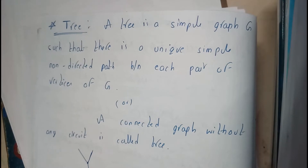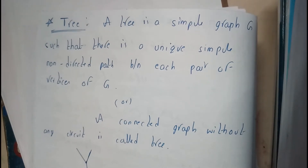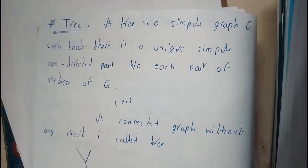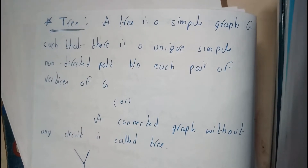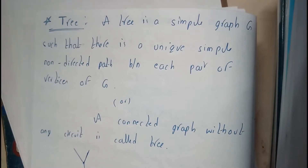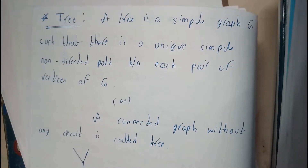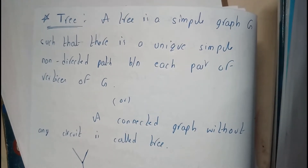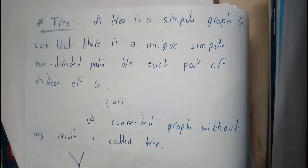In this tutorial, let's see what is a tree. A tree is a simple graph G such that there is a unique simple non-directional path between each pair of vertices. This definition is a bit complex.